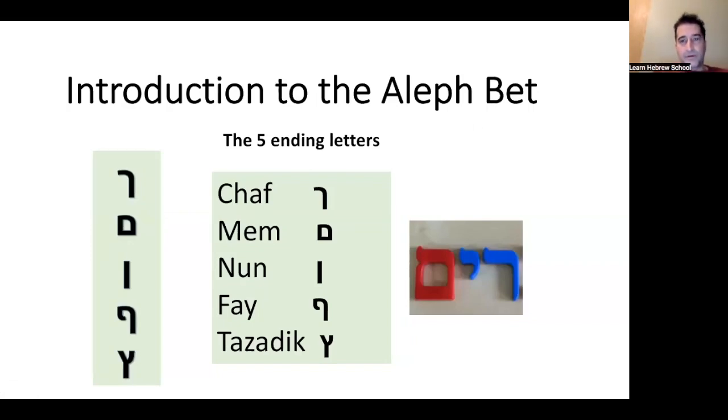In this lesson we're going to learn the five ending letters. In Hebrew an ending letter is called a sofit. Ot is a letter, ot sofit is an ending letter, or in plural sofiyot, otiyot sofiyot.